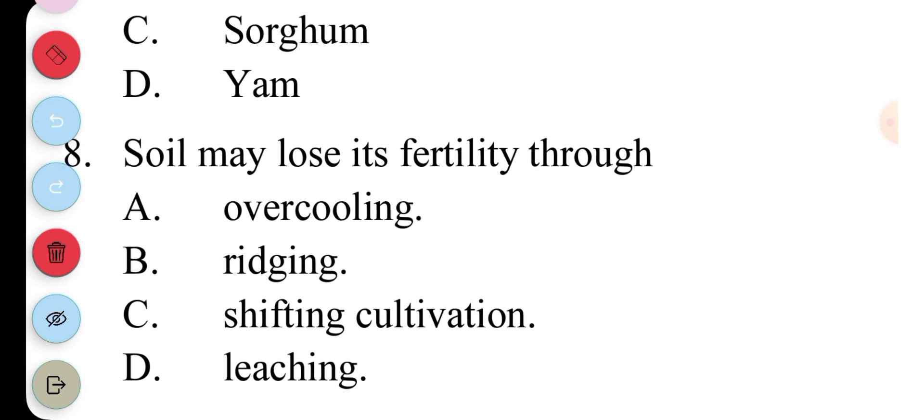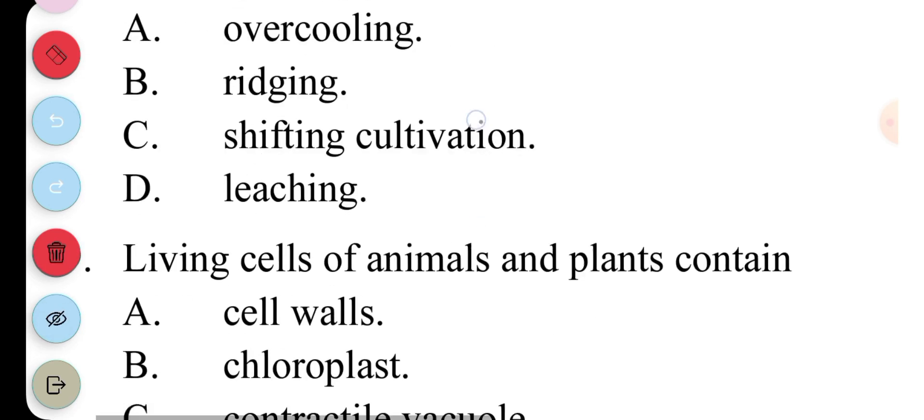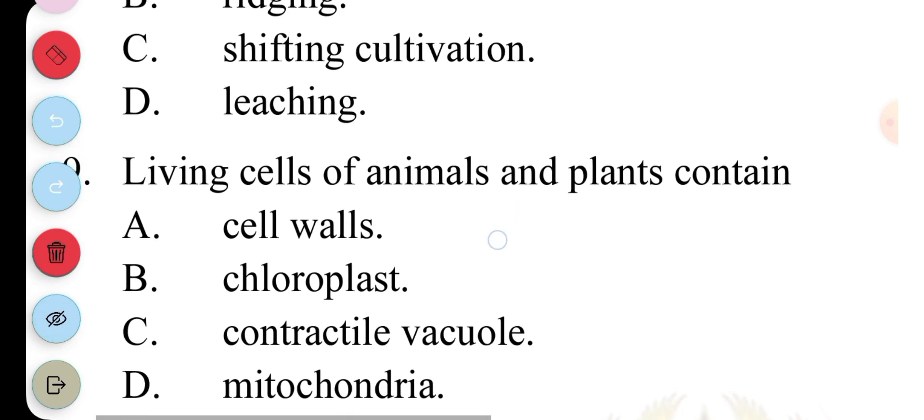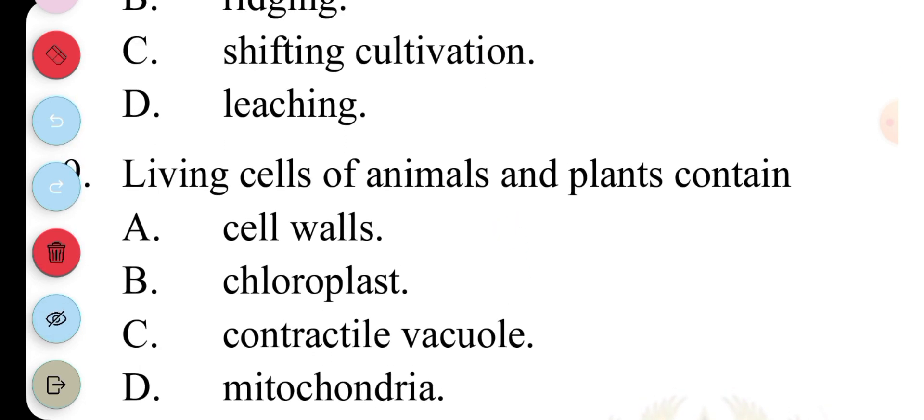Number eight, soil may lose its fertility through A, overcooling; B, erosion; C, shifting cultivation; D, leaching. The answer to this question is D, leaching. Nine, living cells of animals and plants contain A, cell walls; B, chloroplasts; C, contractile vacuole; D, mitochondria. The answer to this question is D, mitochondria.